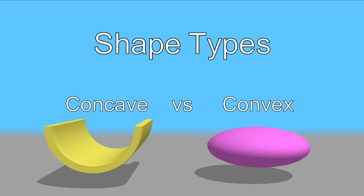Let's start by looking at the shape types we're going to mention in this video. We have a half ring as an example of a concave shape, and the other shape type is convex, and we have an oval as an example.